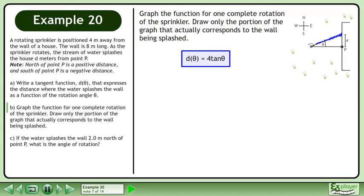We write the function d equals 4 tan theta. Let's redraw the sprinkler and wall so we can animate it.